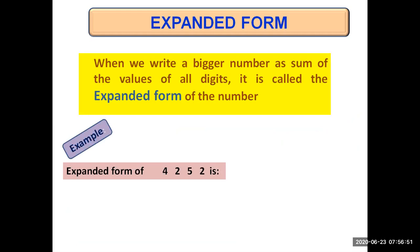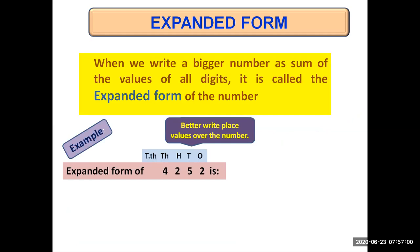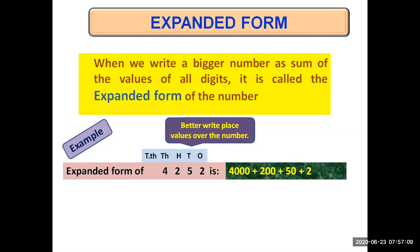For example, we have a number 4252. Before writing its expanded form, it's better to write place values over the number. Two at ones place, five is at tens place, two at hundreds place, four at thousands place. So four at thousands place means four thousand, plus two at hundreds place means two hundred, plus five at tens place means fifty, plus two times one is two. So this is the expanded form of the number 4252.